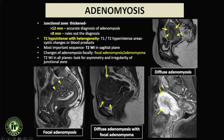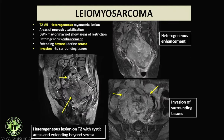Adenomyosis will be discussed in the endometriosis spectrum as well, but it looks similar to a fibroid except the margins are really ill-defined. The uterus is asymmetrically bulky, with the anterior or posterior myometrium asymmetrically thickened. Typical T2 or T1 hyperintense foci are scattered within the myometrium, and a relatively well-defined area — less well-defined than a fibroid — may be seen within the adenomyotic uterus.